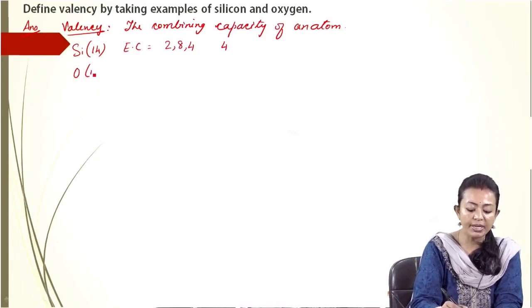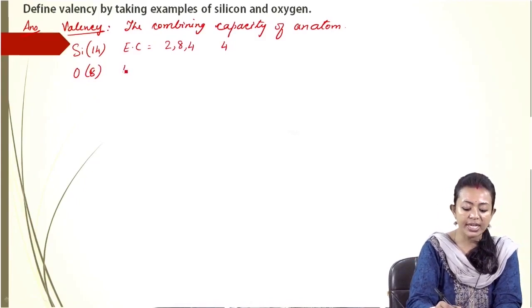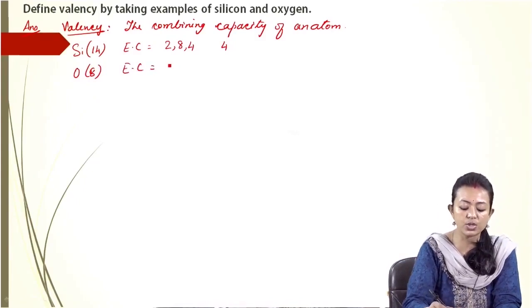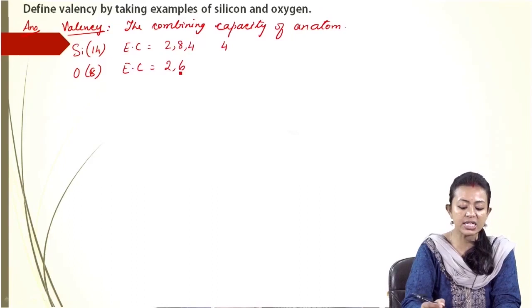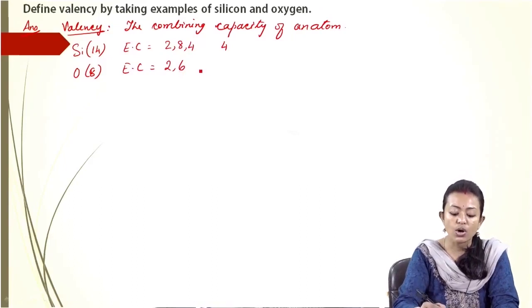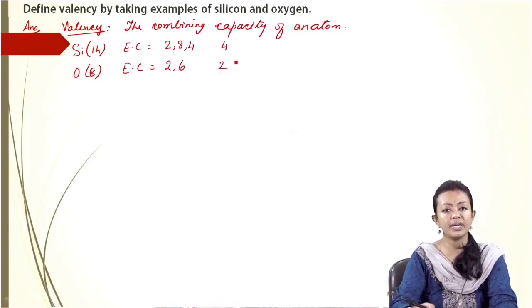Similarly, if we take oxygen, the atomic number is 8. So the electronic configuration of oxygen is going to be 2 and 6. That is, oxygen is in need of 2 electrons. So because oxygen is in need of 2 electrons to make the outermost orbit octet, the valency of oxygen is going to be 2.